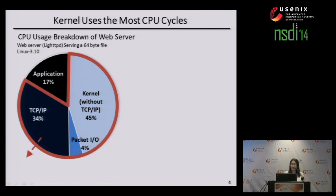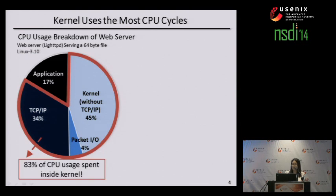We make the web server busy using 100% of CPU. File IO is not a bottleneck. The kernel TCP/IP stack and packet IO use 83% of CPU cycles. The application is only allowed to use 17% of CPU cycles in this measurement. If you want to increase the performance of web servers serving small files, it is clear that you should remove the kernel overhead.